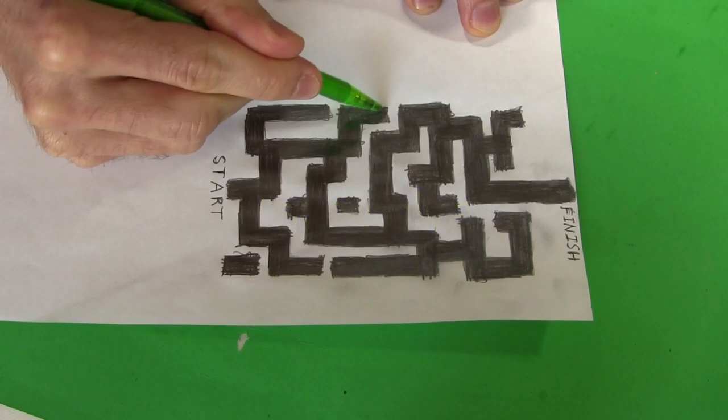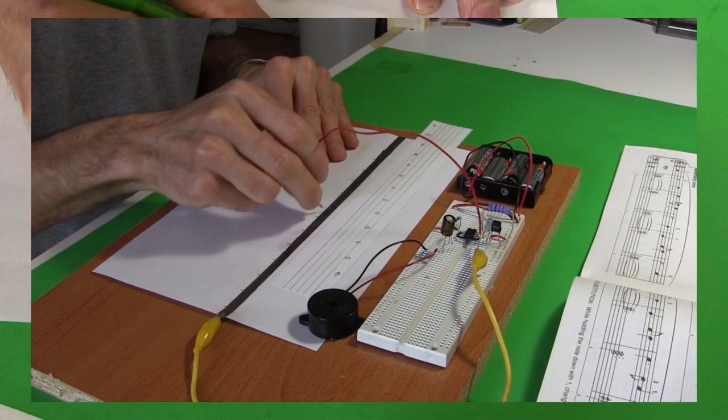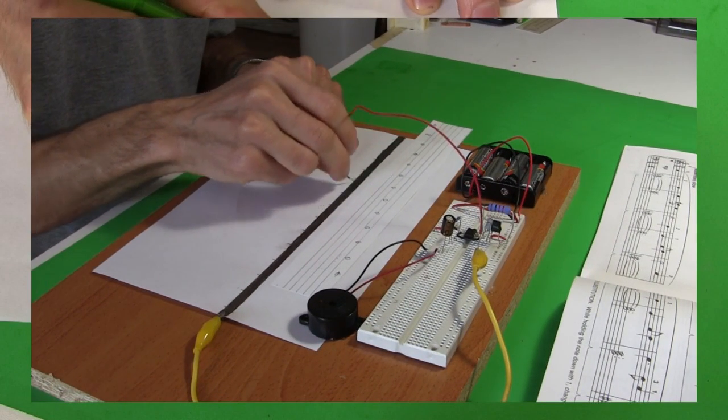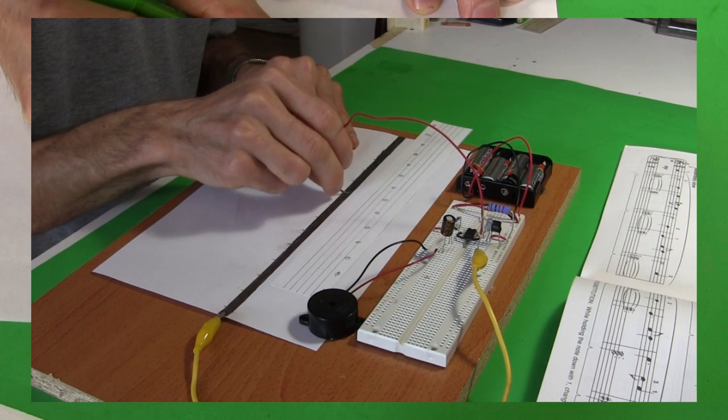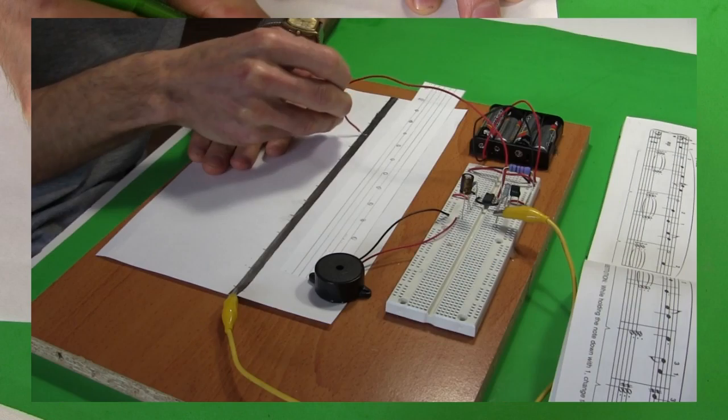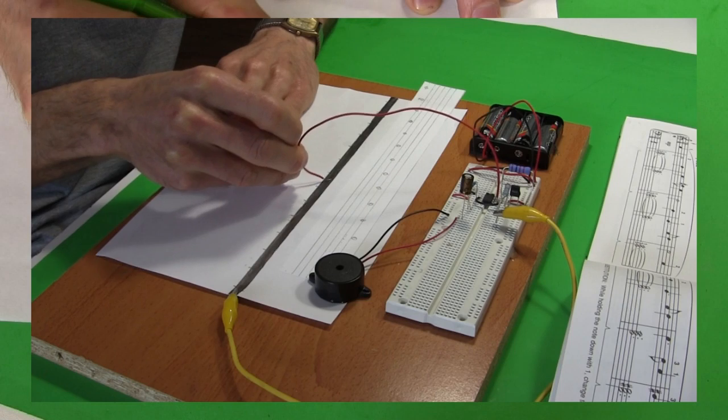I'll start with the maze solver since it's quick. In my first video on how to make the 555 timer circuit I showed this simple music keyboard. It was simply a wide pencil mark on a piece of paper.